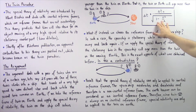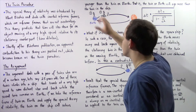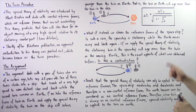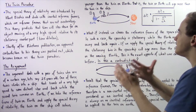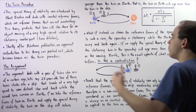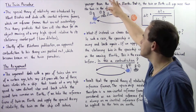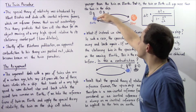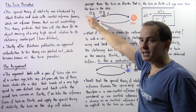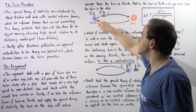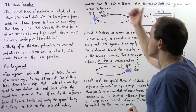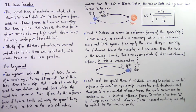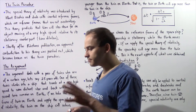The equation that tells us by how much older the Earth twin will be is given by the time dilation formula. Twin two is on Earth, assumed stationary, while twin one travels on the spaceship at very high velocity there and back. When the spaceship returns, the twin on Earth will be older than the twin inside the spaceship.